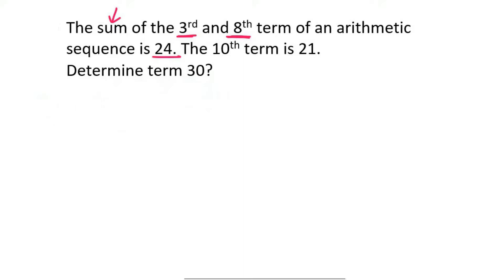So what this actually means is that term 3 plus term 8 will be 24. They also tell us that the tenth term is 21, so we can say T₁₀ equals 21.